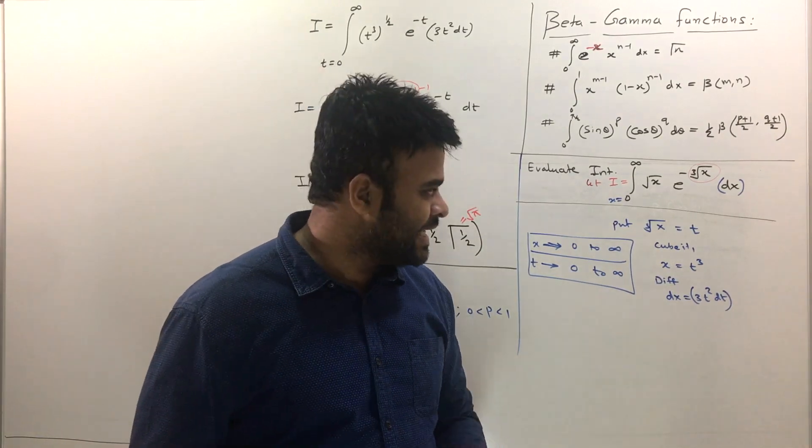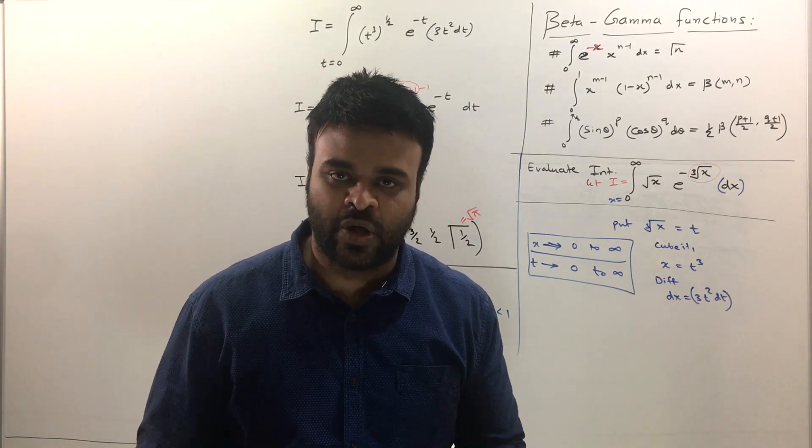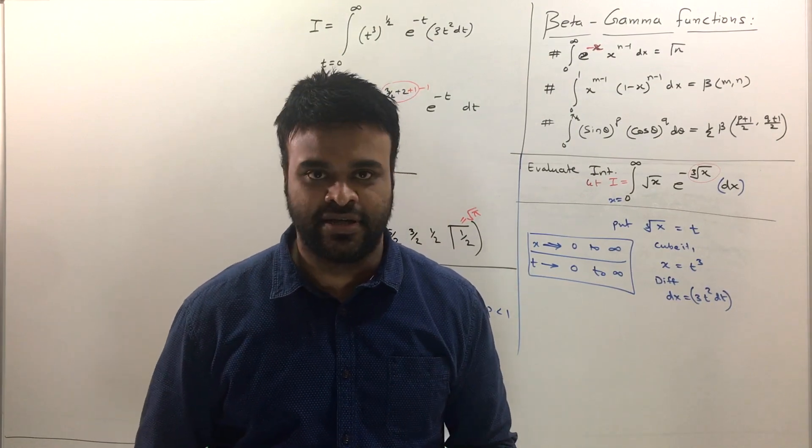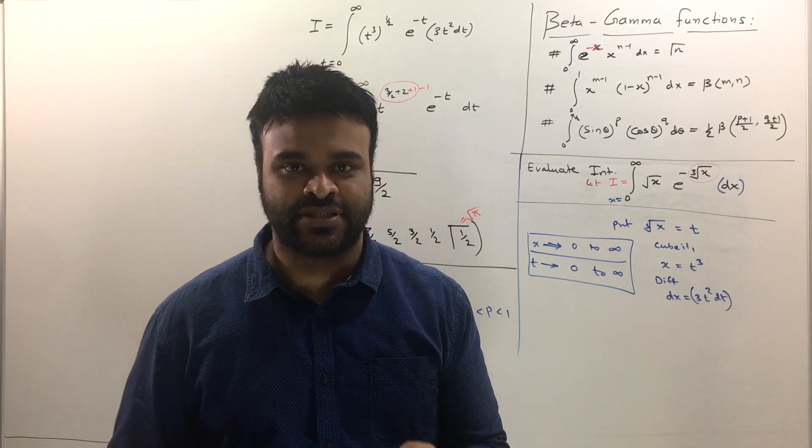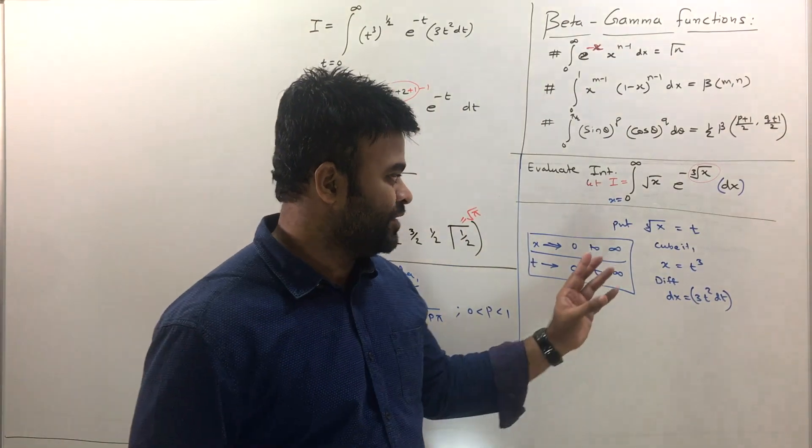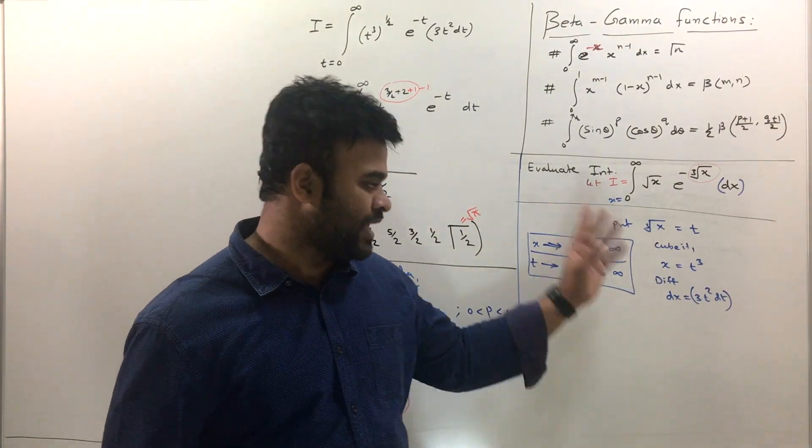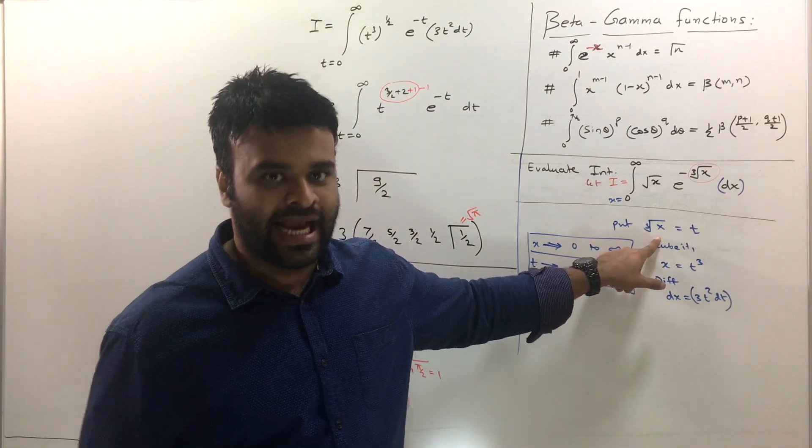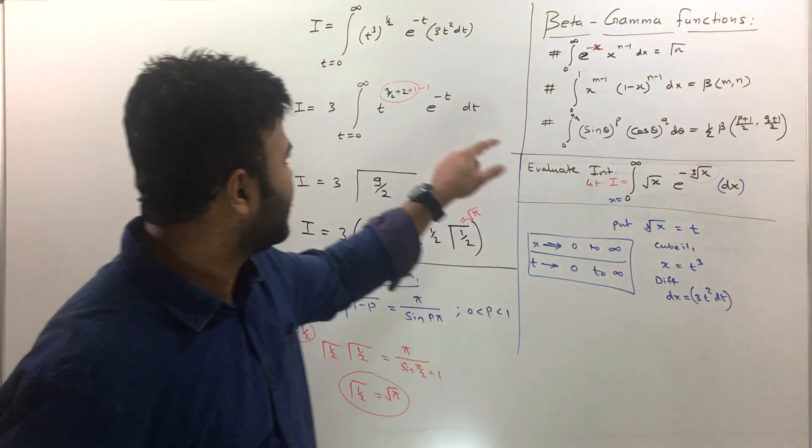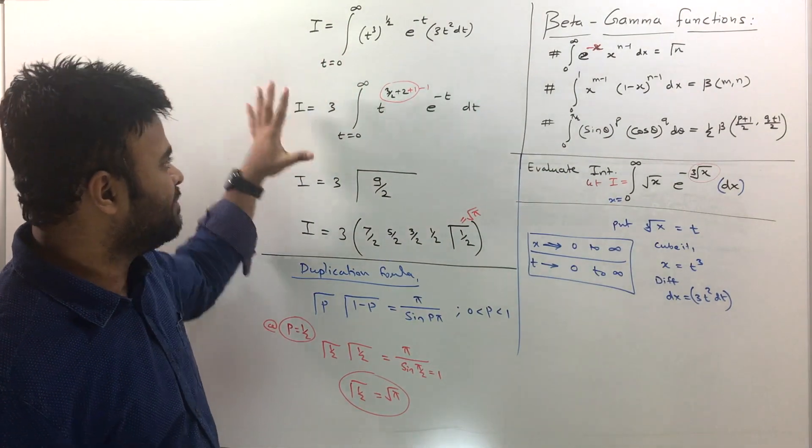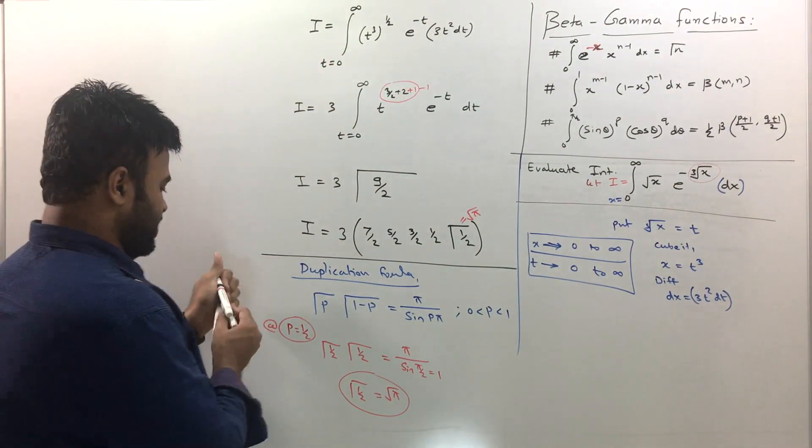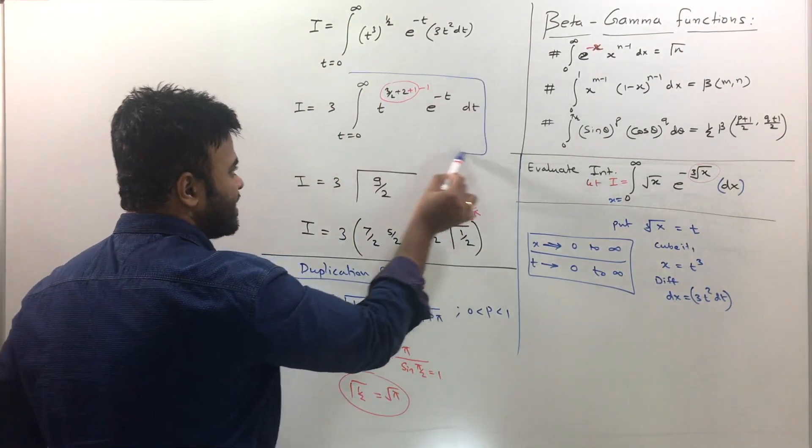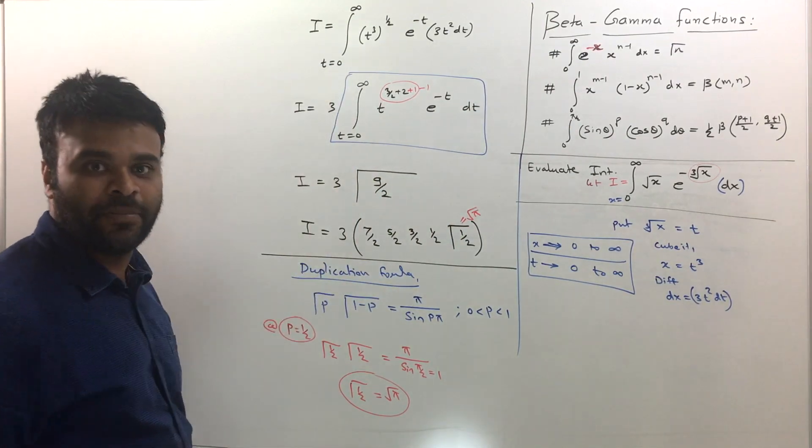So when it is integration, the method to solve integration is substitution. You always substitute some suitable substitution so that you can simplify and get it. So I did the substitution. And after substituting the value, you can see that I have got it in the exact form. So now this one here is the exact gamma form.